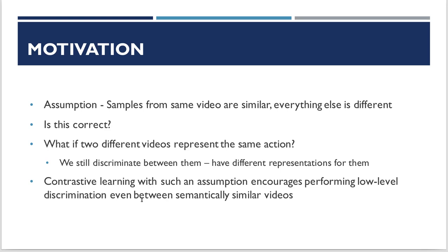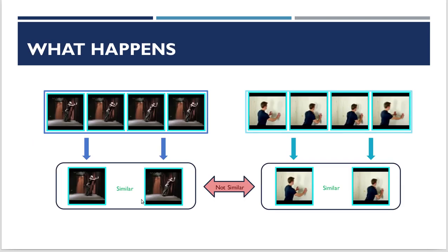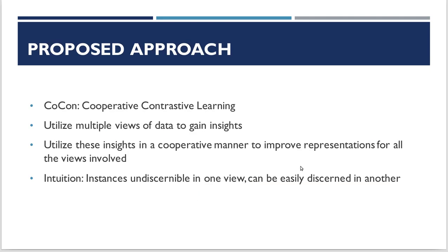Let's revisit our motivation. We are saying that samples from the same video are similar and samples from different ones are different. However, is this correct? What if two different videos are representing the same action? If we want representations which capture the underlying action, contrastive learning will still discriminate between them even though they have the same underlying semantic content — performing low-level discrimination even between actually similar videos. What we want is that representations from video one and video two should be the same. This is tough because we do not know the labels during training at all — this is an unlabeled setting.